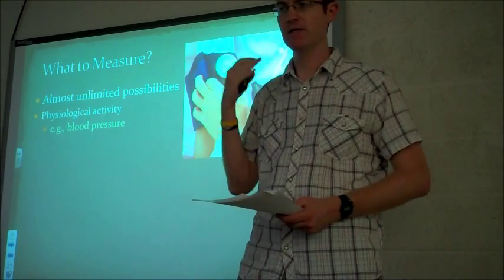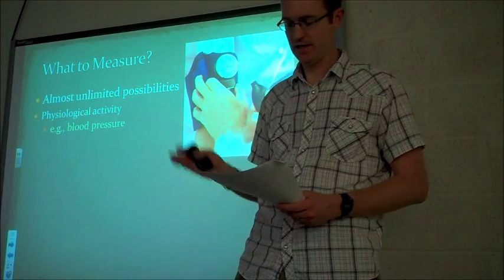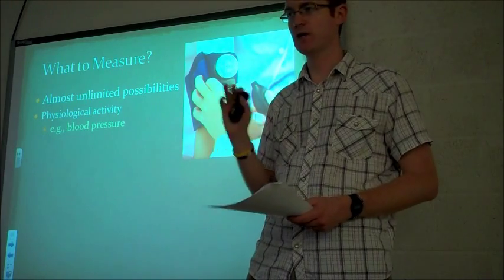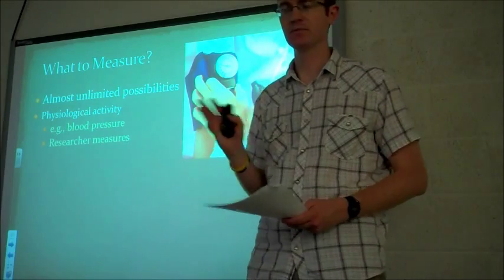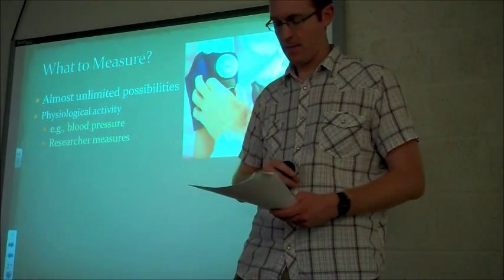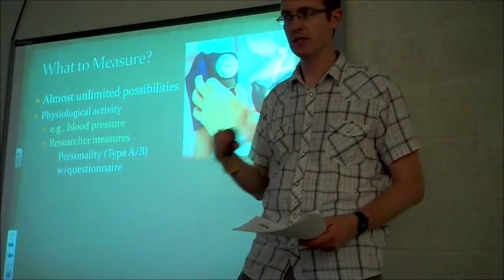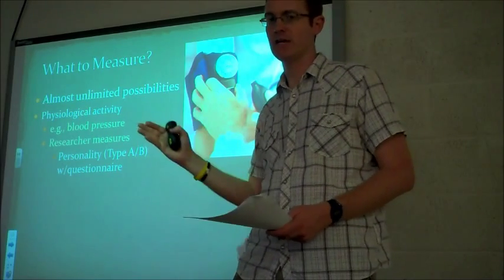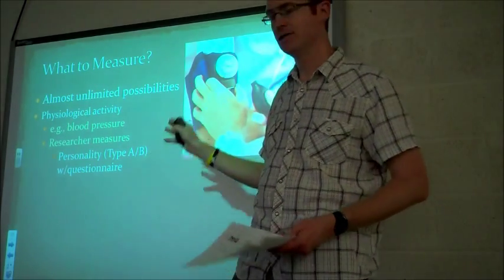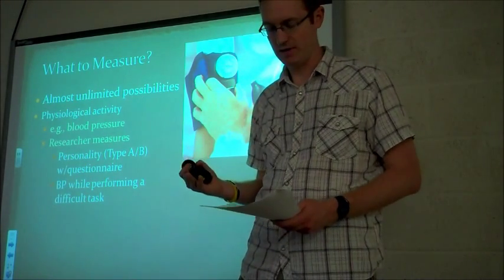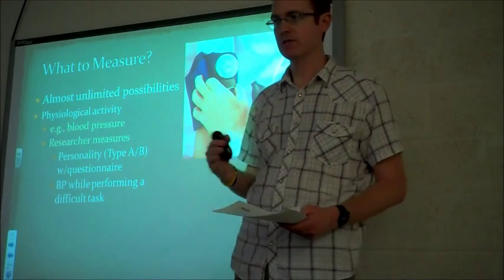Let's say you're interested in the distinction in stress response between people with different personality types — the notion of type A and type B personality, though some researchers are skeptical about that. What you could do is first use a self-report measure, a questionnaire that determines whether somebody is more type A — tightly wound, high stress response — or type B. And then in conjunction with that, you could get a physiological measurement: a recording of participants' blood pressure changes taken while they are performing some type of difficult task.